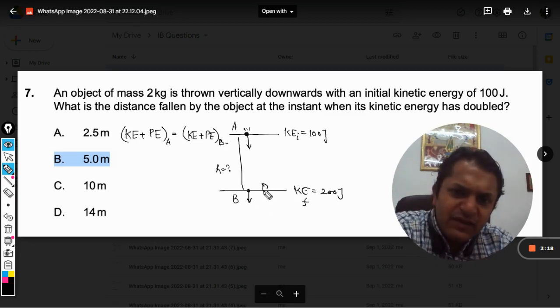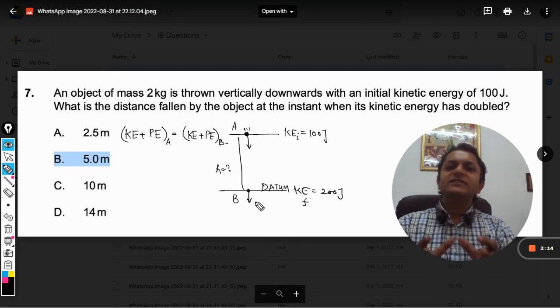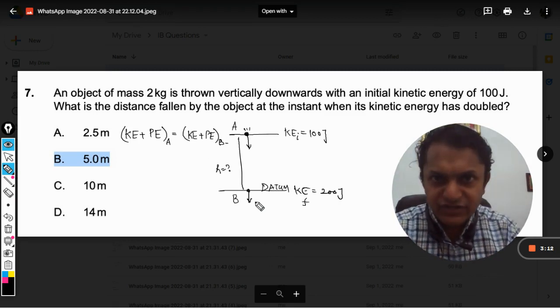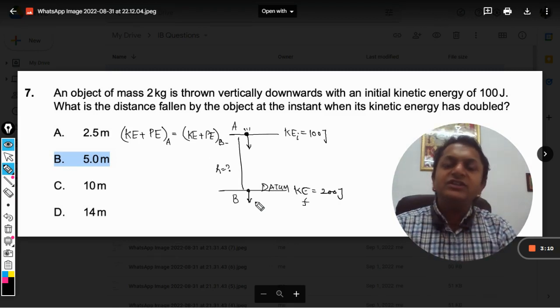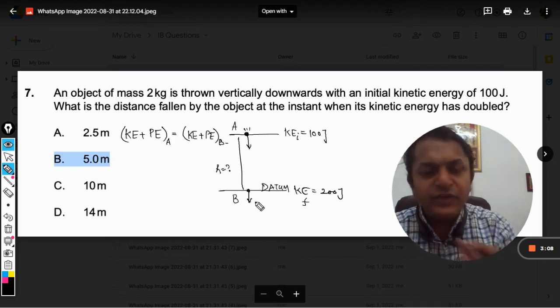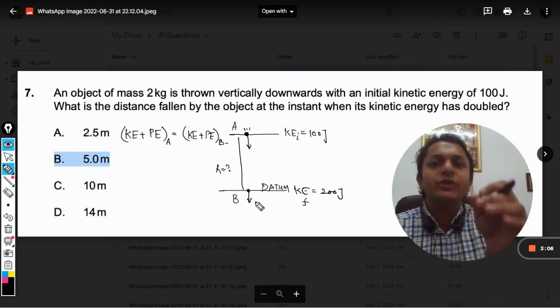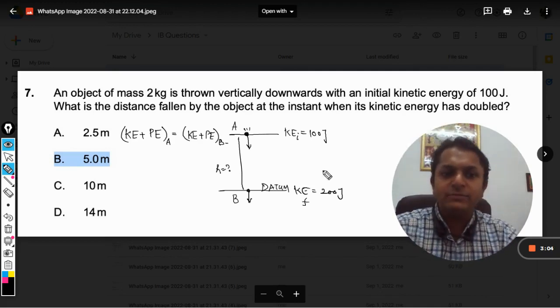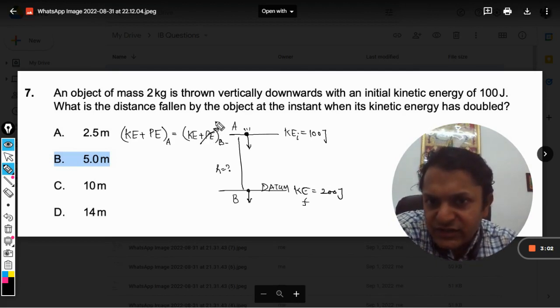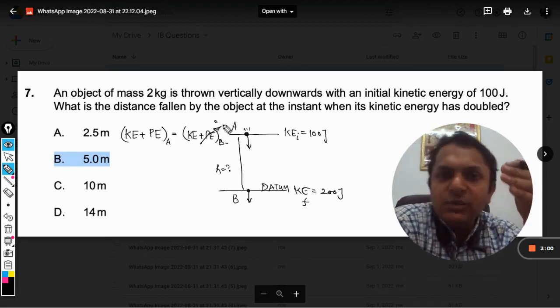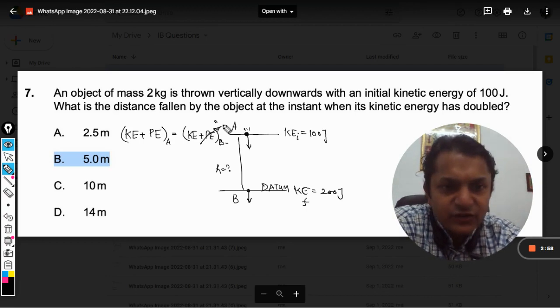Now what is happening is this B will be taken as the datum, the reference, and the potential energy at location B will be taken as 0. So the potential energy at A will be equal to MGH. The potential energy is taken as 0 because the B point is taken as reference.